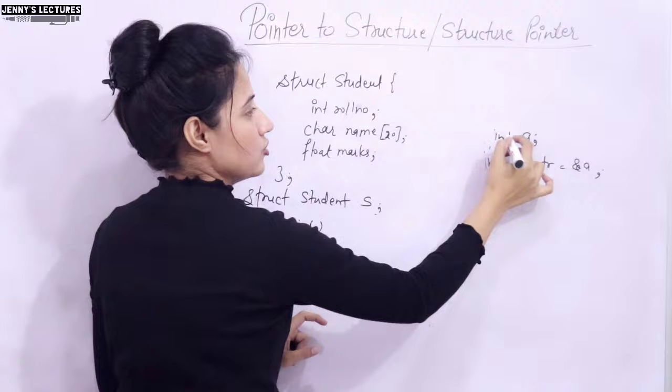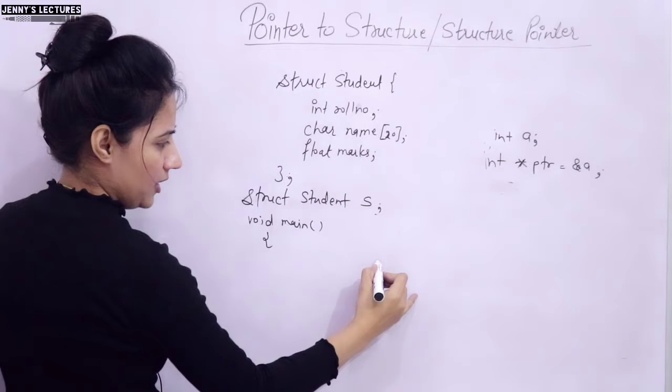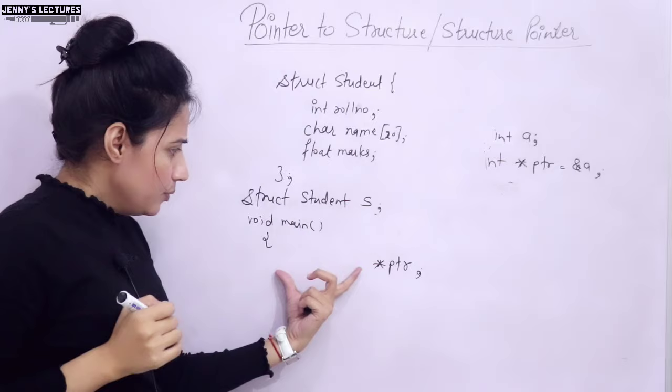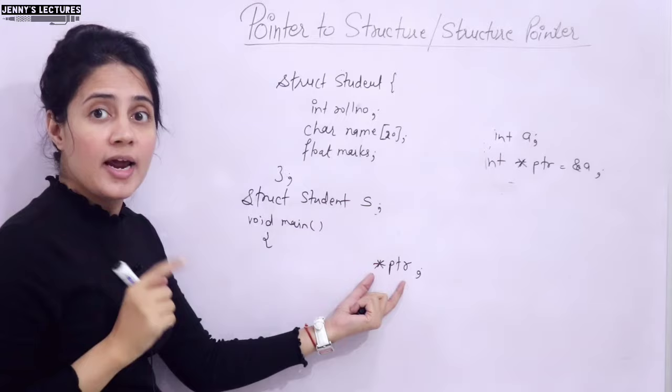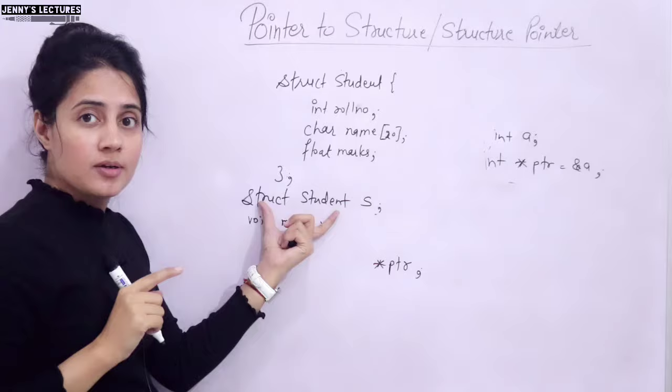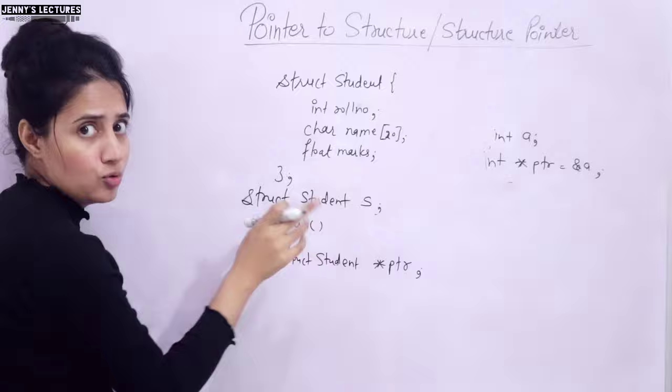Now I have a variable of type 'struct student'. So in the main function, I'm taking a pointer ptr. What should be the data type of this pointer? Since I want to store the address of 's', and s has data type 'struct student', we must write 'struct student' as the data type of ptr as well. So you write 'struct student *ptr' - same data type, which is a user-defined data type.